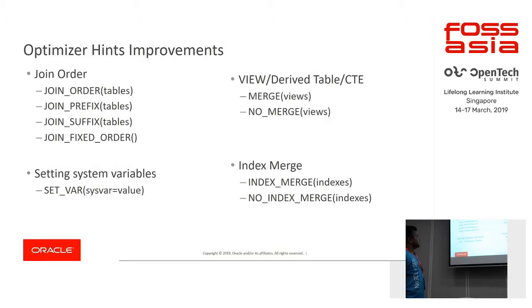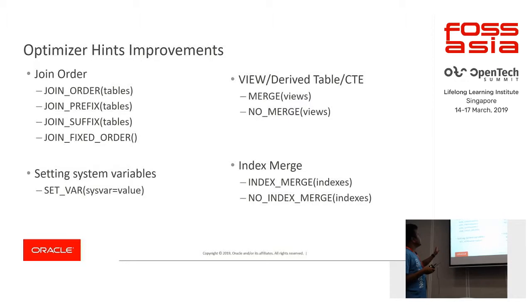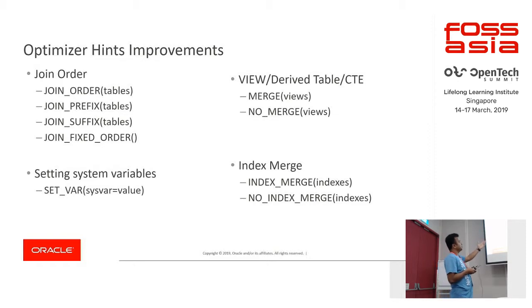The next topic is optimizer hints. Hints have been in the optimizer for a long time, but in 8.2 we have started implementing many more. The set of hints implemented in 8.2 includes join order hints, hints for setting system variables, hints for views and derived tables for merge and no-merge, and hints for index merges.